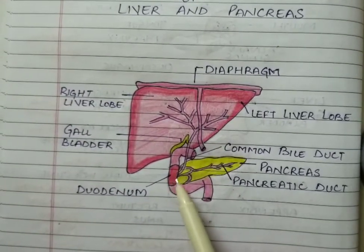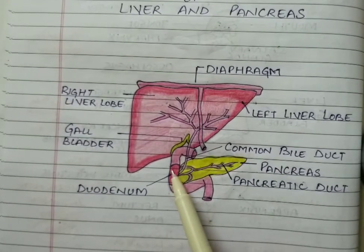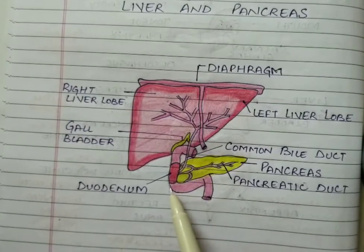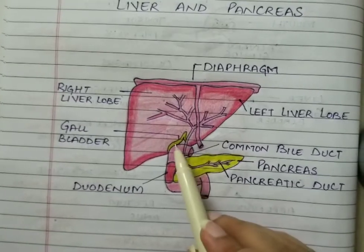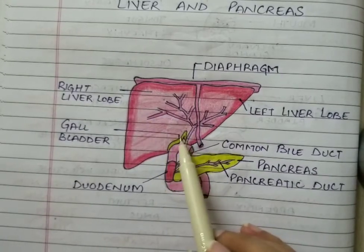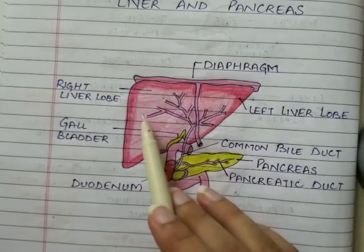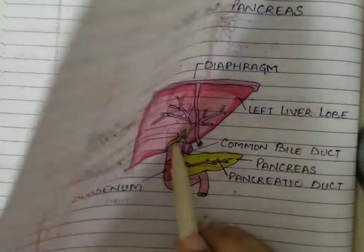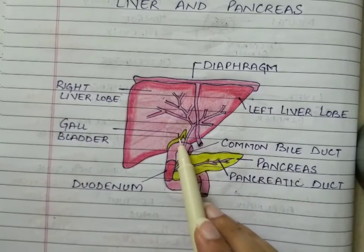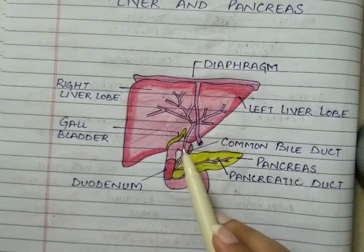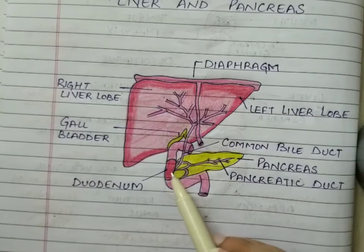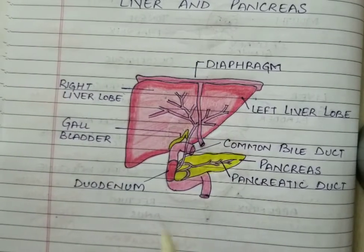Here is the duodenum. The location of the pancreas is in the U-shaped loop of the duodenum — here is the pancreas. Then you have the gallbladder present here. This gallbladder stores the bile juice which is prepared by the liver. The liver prepares the bile juice and it gets stored in the gallbladder. From the gallbladder, the common bile duct carries the bile juice and secretes it into the small intestine.